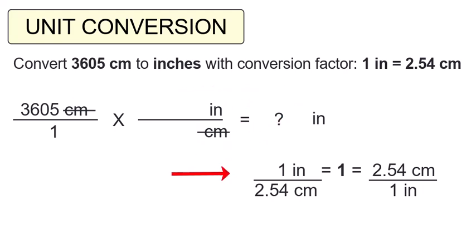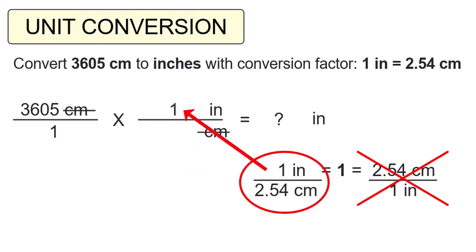Next, we're going to add in the numbers from the conversion factor that correspond with those units. Units first, numbers second. Our conversion factor is one inch equals 2.54 centimeters. So the number one goes with the inches and 2.54 goes with the centimeters.